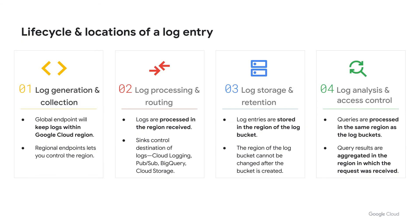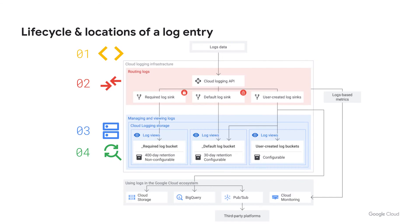Let's start with the lifecycle of the log entry. There are four stages: log generation and collection, where logs are generated and sent to the logging API; log processing and routing; log storage and retention; and log analysis and access control. Our engineers examined each step to make sure it meets your data residency requirements. A log is generated by an application — it could be one you developed or a third-party application like SAP, NGINX, or a cloud service like BigQuery. That log entry will be sent to the Google Cloud Logging API at logging.googleapis.com.